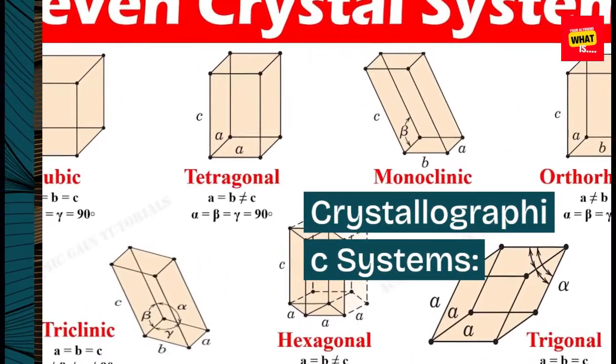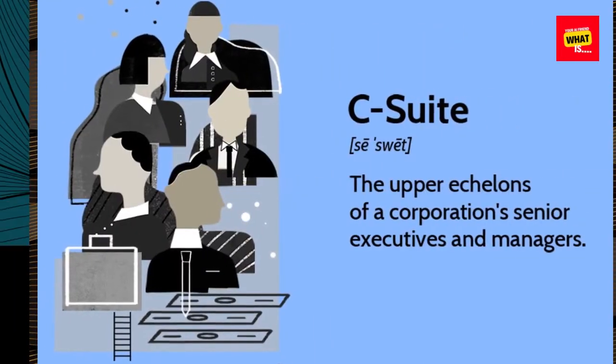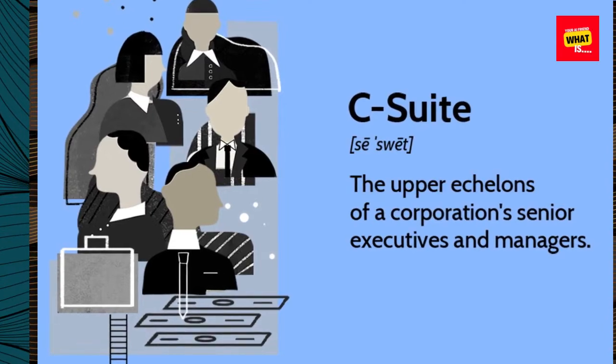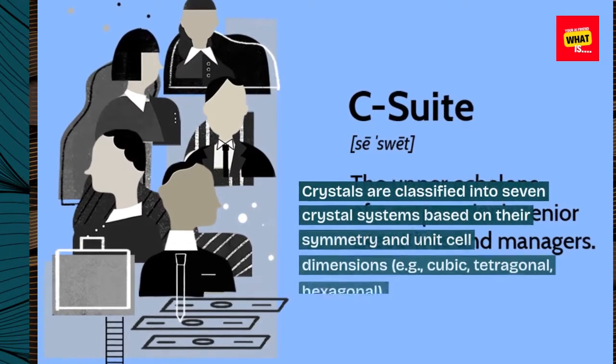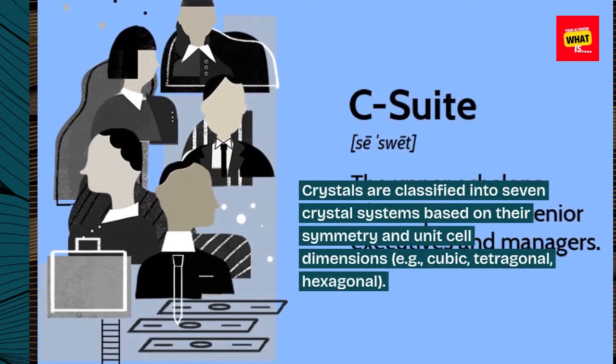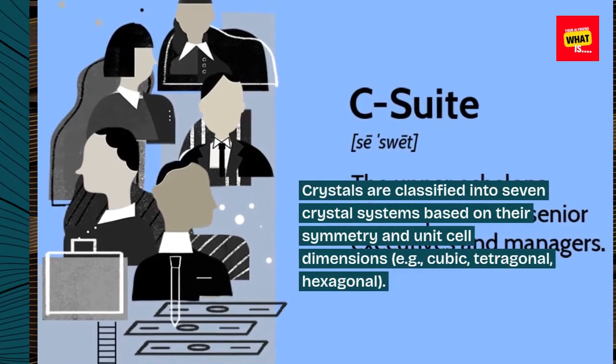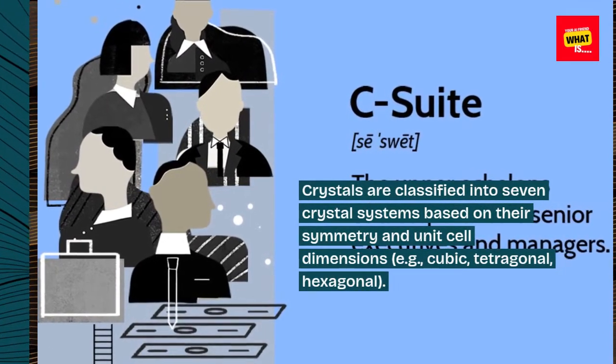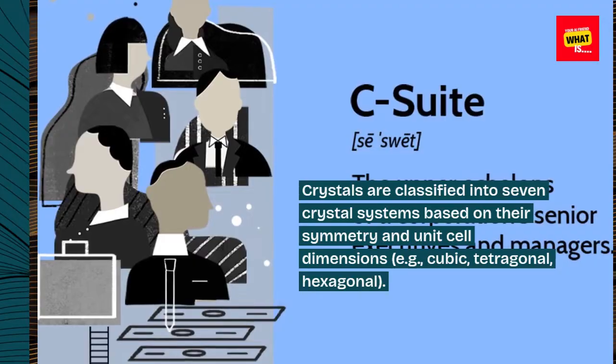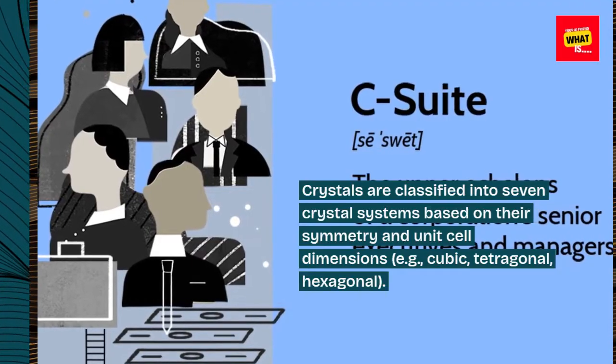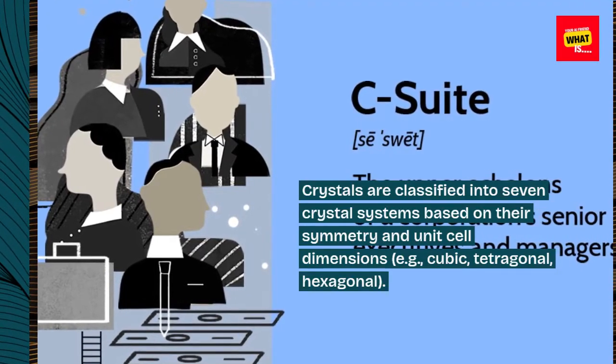Crystallographic Systems. Crystals are classified into seven crystal systems based on their symmetry and unit cell dimensions, e.g., cubic, tetragonal, hexagonal.